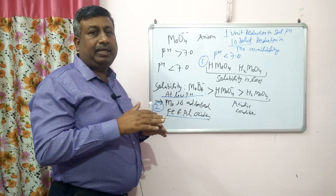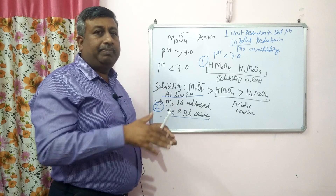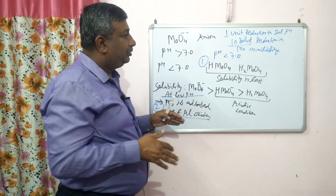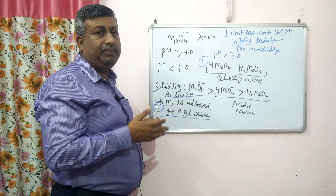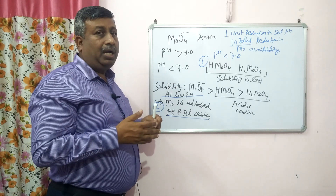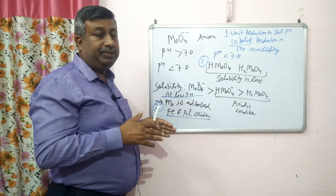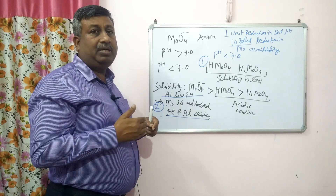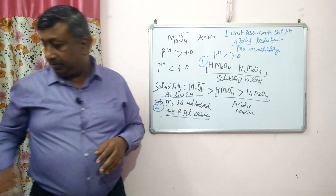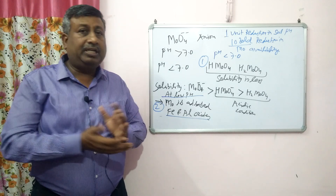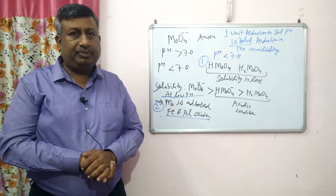Other metallic cations such as iron, copper, zinc, and manganese are available under acidic conditions, with molybdenum being the exception. These are the reasons why molybdenum is available at high pH and manganese is available under acidic pH. As pH increases, molybdenum availability increases. Thank you very much.